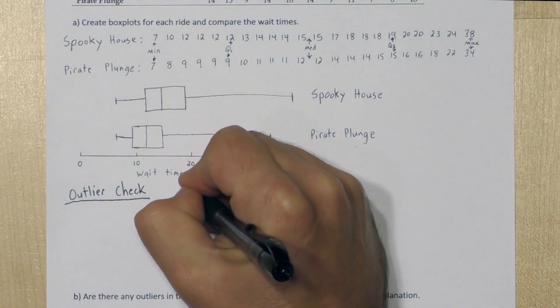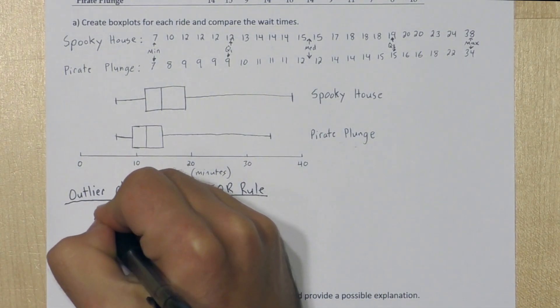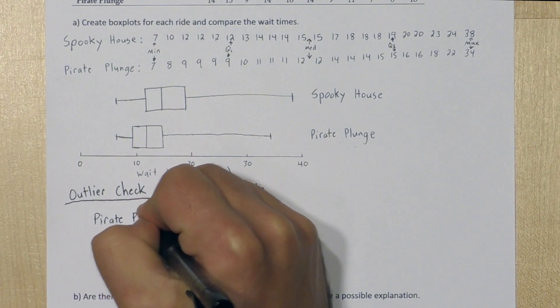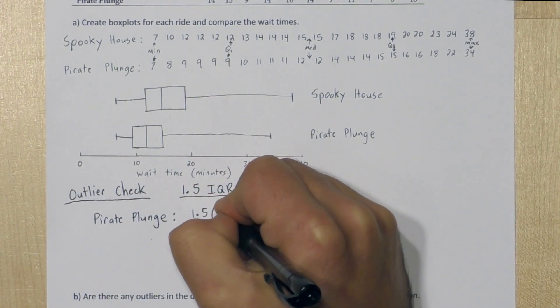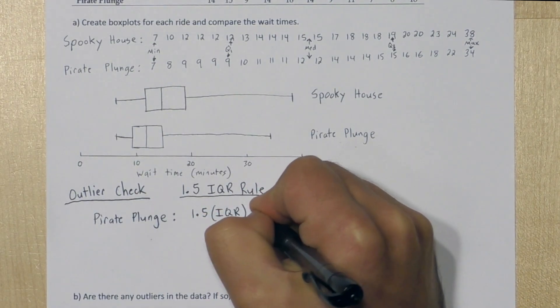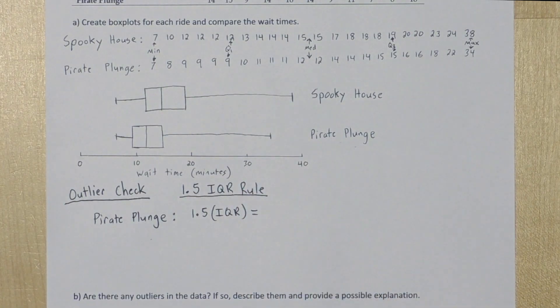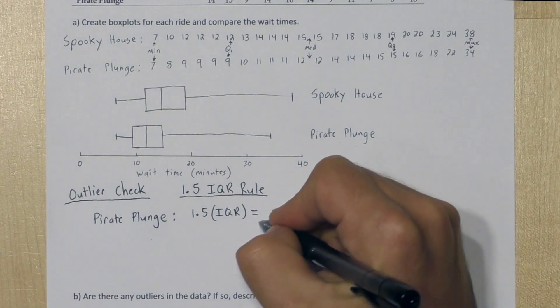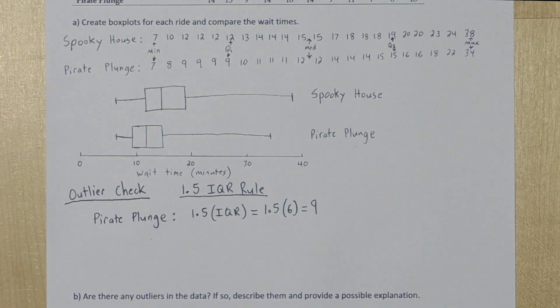And to check for outliers, we're going to use the 1.5 IQR rule. So we'll start with Pirate Plunge. We first need to figure out what 1.5 times the IQR, the interquartile range is. So the interquartile range for Pirate Plunge will be 15 minus 9, so 6. And we have to multiply that by 1.5. And when we do, we get 9.